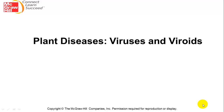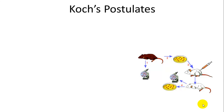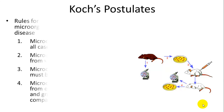For the next section, we're going to start talking about plant diseases and infections, and we're going to start with viruses and viroids. But first, we're going to talk about one of the pioneers in microbiology, and that is Koch.